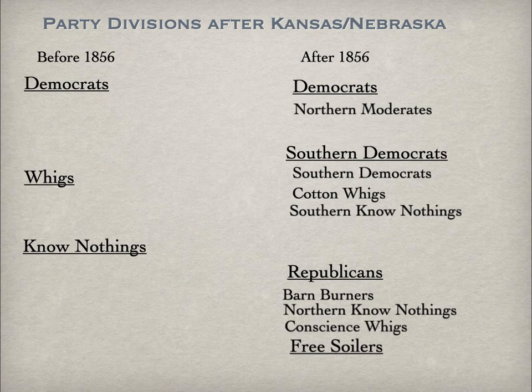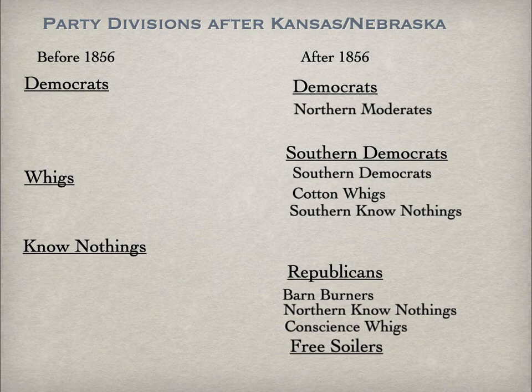Similarly, the Know-Nothing Party would split into northern and southern Know-Nothings. Southern Know-Nothings would join their Southern Democratic allies, and northern Know-Nothings would join the Republican Party. The Free Soil Movement simply switched its alliance from the Free Soil Party into the Republican Party.